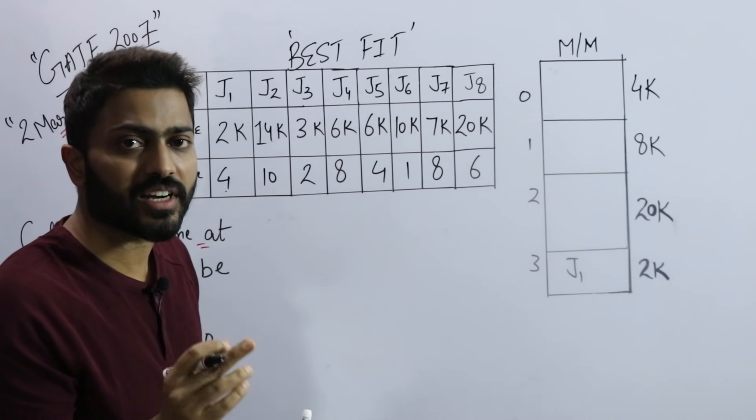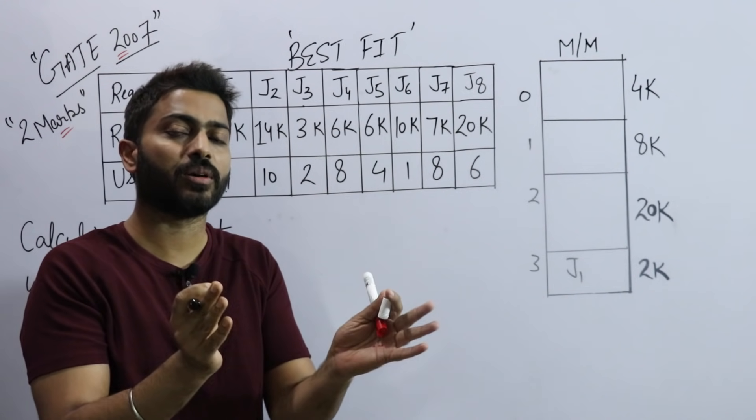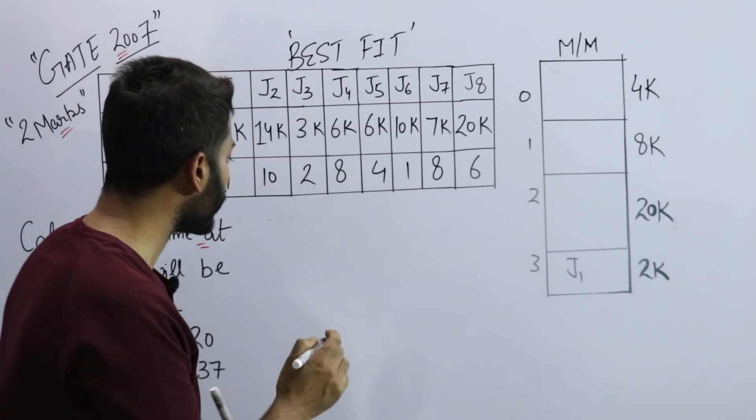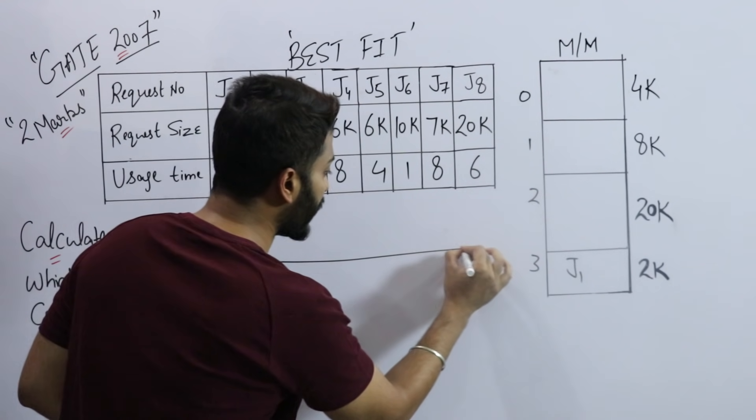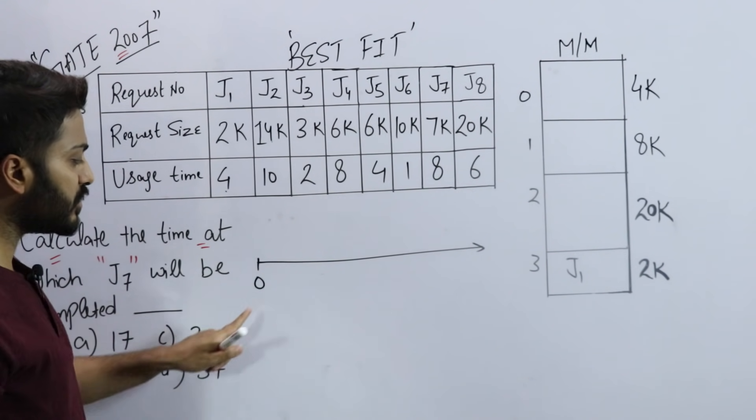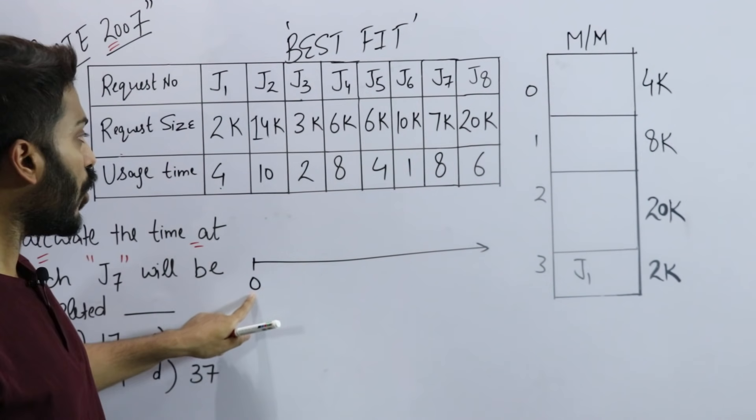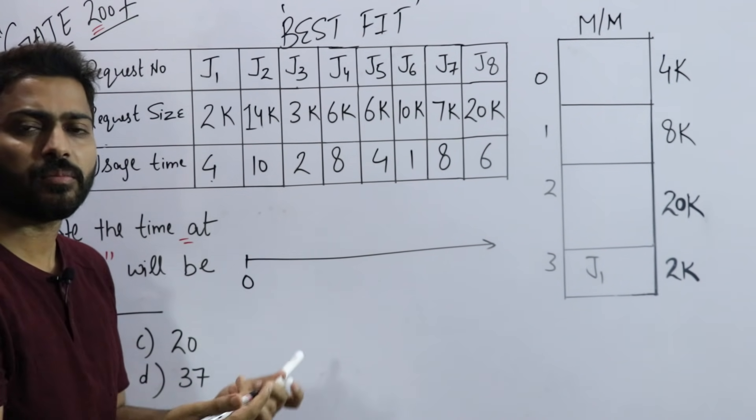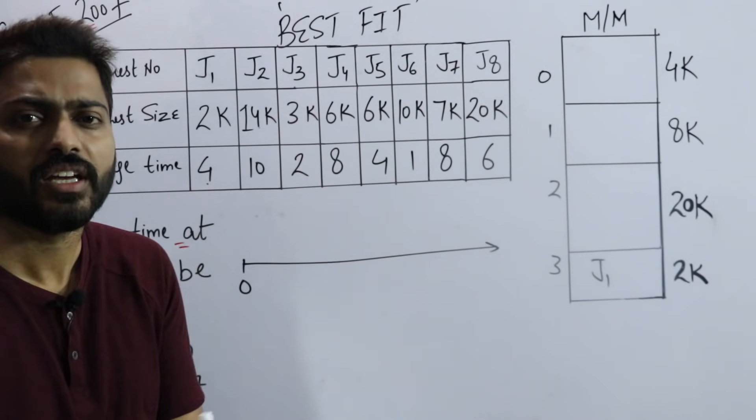Obviously GATE will give you tricky questions. If I solve it according to the timeline, let's start with time zero. Assume all the processes came at same time - it's not mentioned when each job arrived, so we can assume all jobs came at same time.